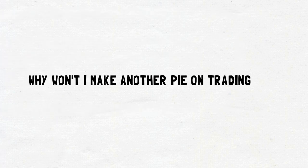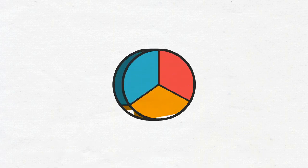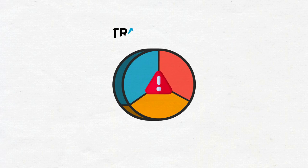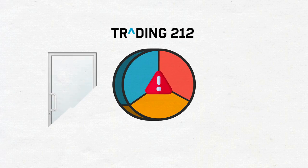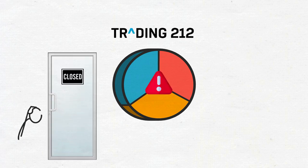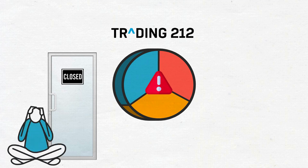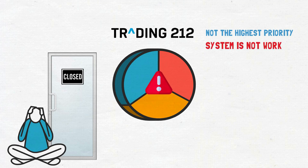So why won't I make another Pie on Trading 212? Well, firstly the whole Pie library system is broken, or was neglected shortly after it was created, and that's understandable as Trading 212 had a sudden influx of users and had to close its doors for almost a year. So a tangential feature on the platform was not the highest priority, and they're working on other features more central to the actual service. Still, the system is not working as well as I believe it could, and here are the biggest issues I have with it.